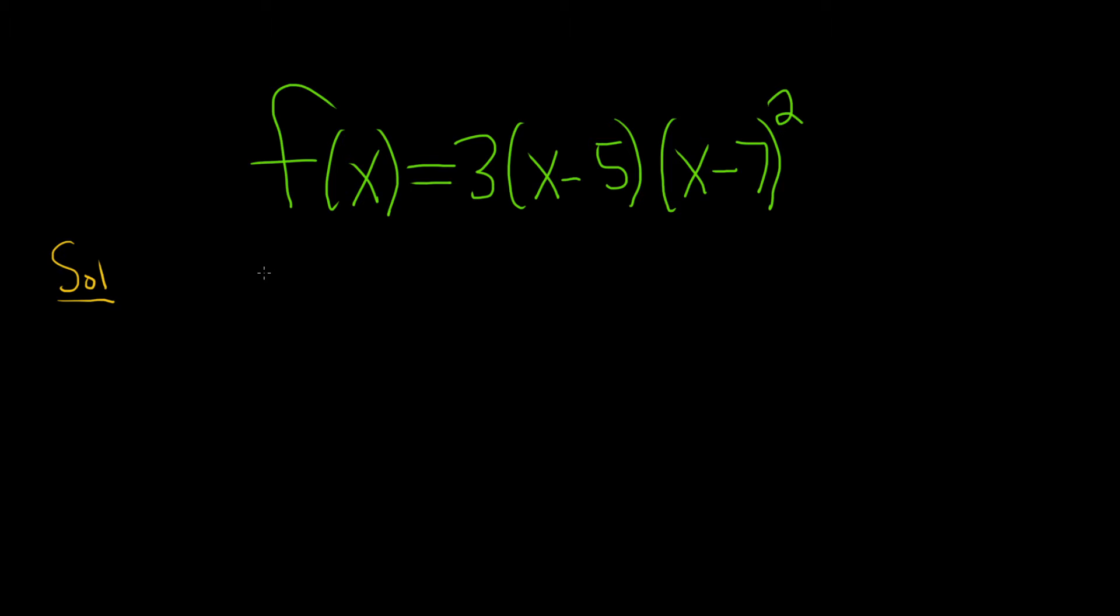To find the zeros, we just take our function f(x) and set it equal to zero. So we have 3(x-5)(x-7)² equals zero. Whenever you have a product equal to zero, you can just set each piece equal to zero. You could just divide the three away if you're wondering, so we don't have to worry about the three. So we have (x-5)(x-7)² equal to zero.